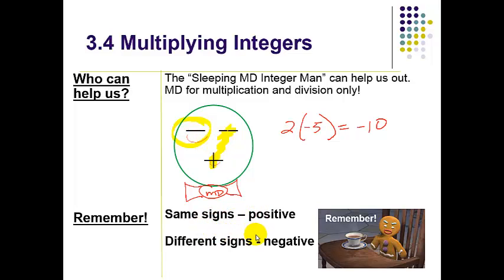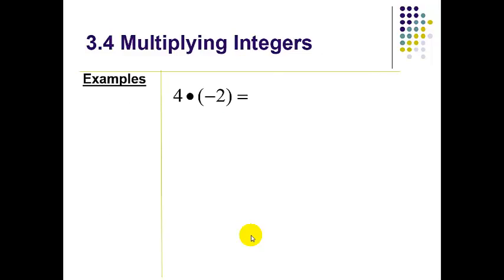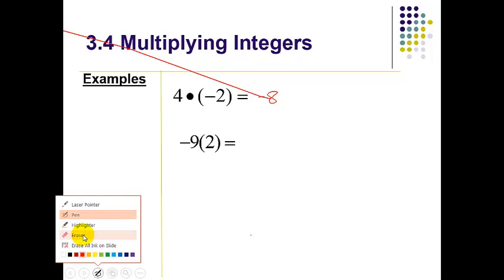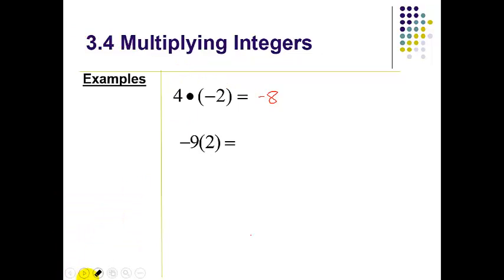So here's a couple of examples: 4 times negative 2, positive-positive different signs, it's going to give us negative 8. Different signs negative, same signs positive. Again, this is different signs. Different signs, it's going to be a negative, and I do my normal multiplication: 9 times 2 is 18.